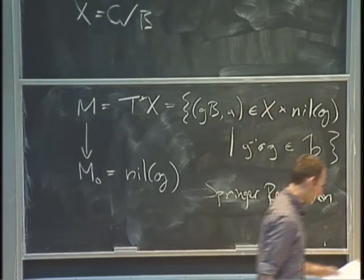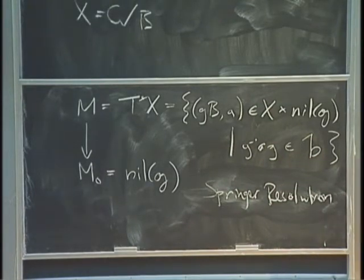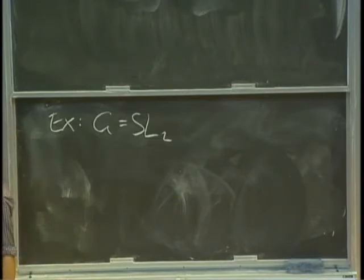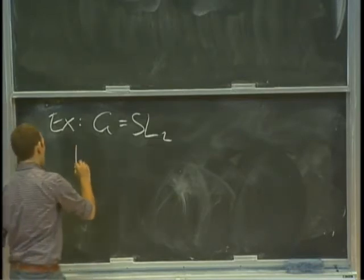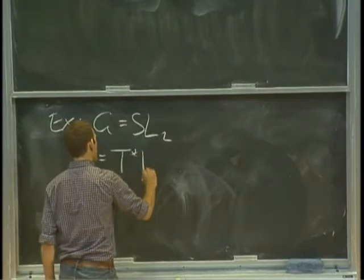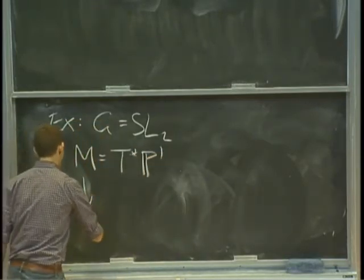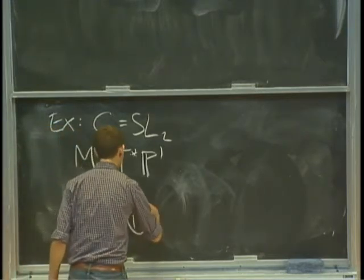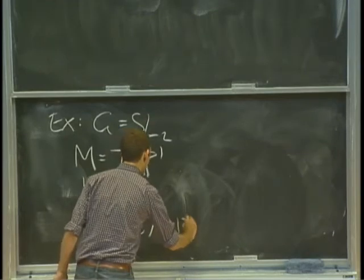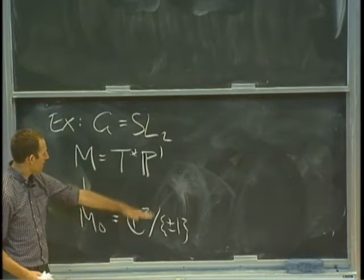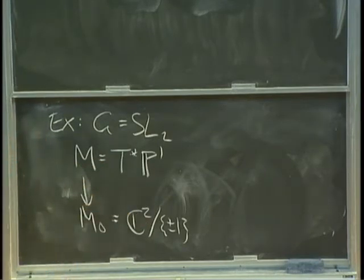Let me give the simplest example. Take G to be SL2. In this case, X is P1, so M is the cotangent bundle of P1. The nilpotent cone M0 is just isomorphic to C2 modulo the action of plus or minus 1. So the example to keep in mind is T* P1 resolving the quadratic cone.